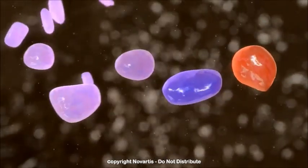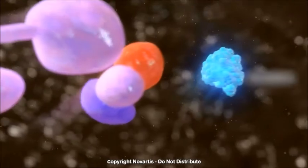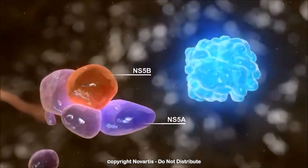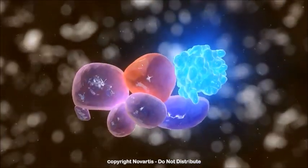An essential step in the replication of viral RNA is the interaction of the host cell protein cyclophilin A with the viral proteins NS5A and NS5B. This enables the functional replication complex.